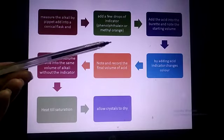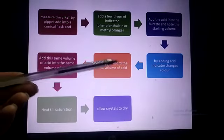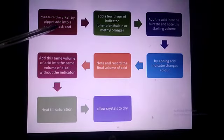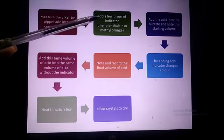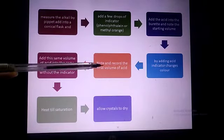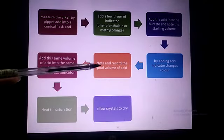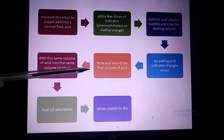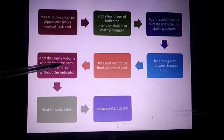Add acid into the burette and note the starting volume. By adding acid, the indicator will change color because we added acid to the alkali. Then note and record the final volume of acid - this shows how much acid is required to neutralize the base.